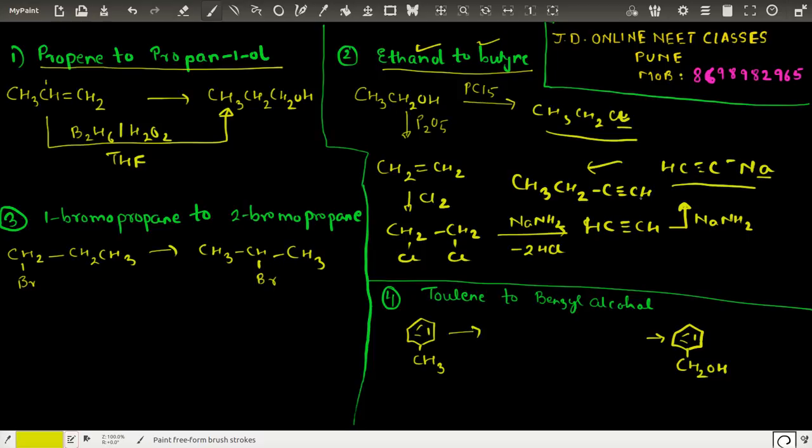The third is 1-bromopropane to 2-bromopropane. First we use alcoholic KOH - alcoholic KOH is a dehydrohalogenating agent. We end up getting CH2=CH-CH3, we get propene. Now what we want is a simple Markovnikov addition.